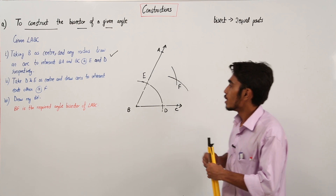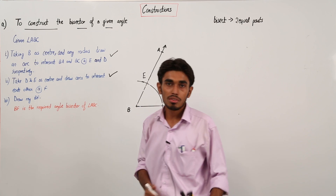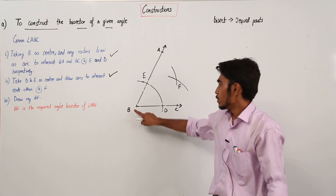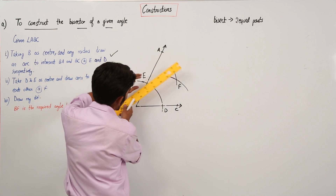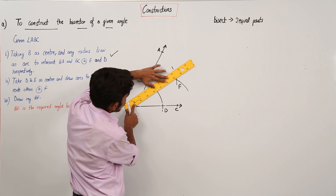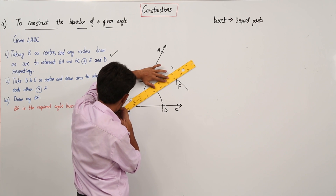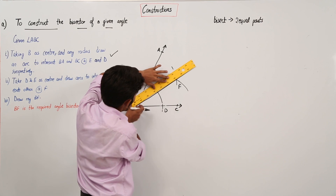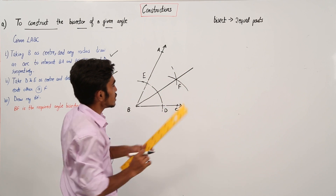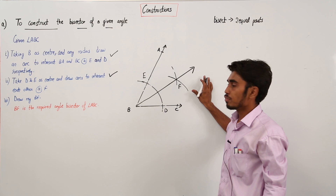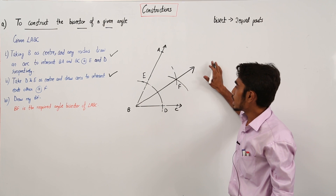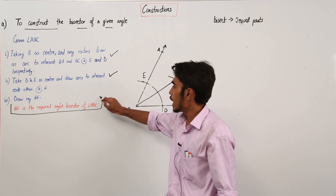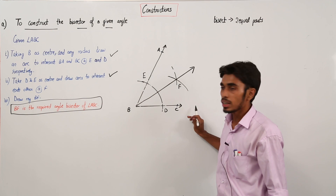Now the last step: draw ray BF. So what we need to do is draw the ray BF — we need to join B and F. So this is ray BF, which is nothing but the angle bisector of angle ABC. We can see that BF is the required angle bisector of angle ABC.